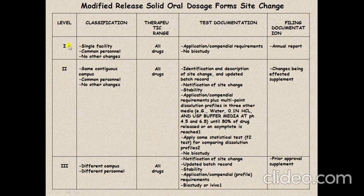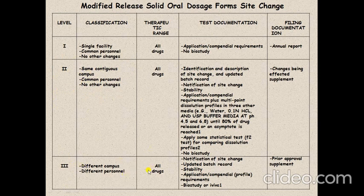Summarizing the differences: Level 1 involves minor changes within a single facility. Level 2 involves changing the manufacturing site within the same campus — changing the building but within the same campus. Level 3 involves completely changing the campus and the personnel working in the manufacturing process or analytical laboratory.